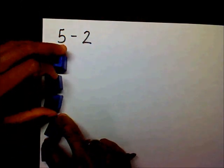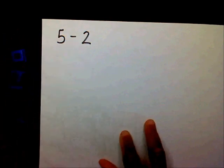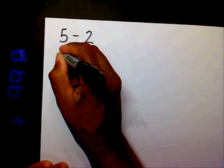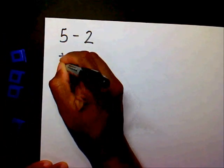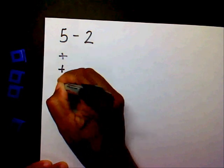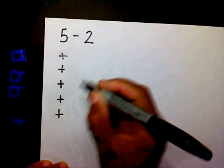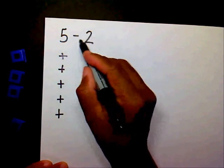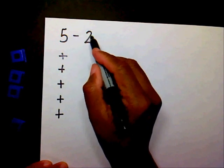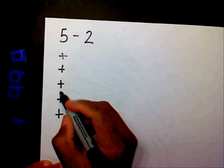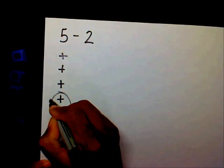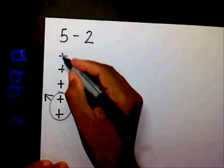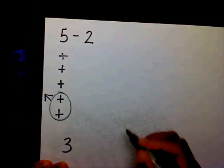If I'm taking a test and I don't have cubes or tiles to use, I could say I have five positives and I want to subtract two positives — I want to take away two positives. Well, that leaves me with three positives.